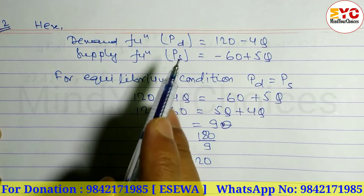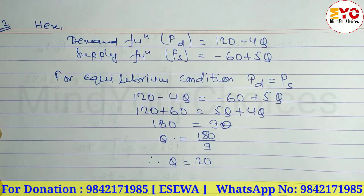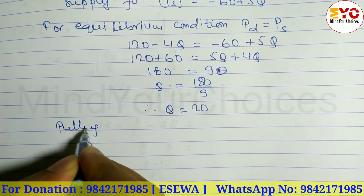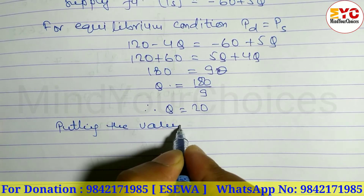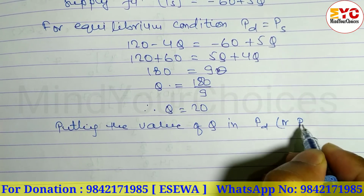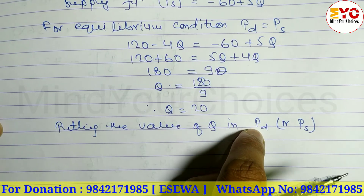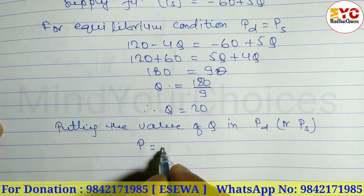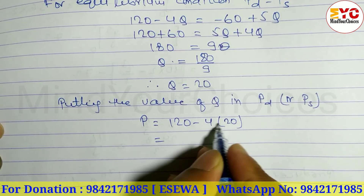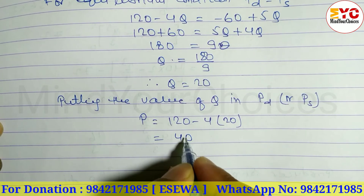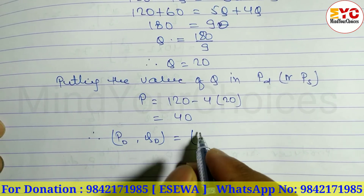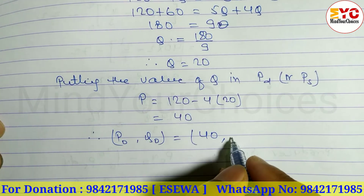Now with Q = 20, we find the value of P by putting the value of Q into the demand function PD = 120 - 4Q. So PD = 120 - 4 × 20 = 120 - 80 = 40. Therefore the equilibrium price P₀ = 40 and the equilibrium quantity Q₀ = 20.